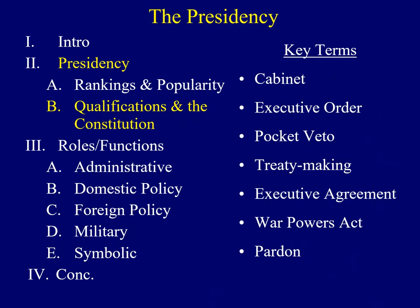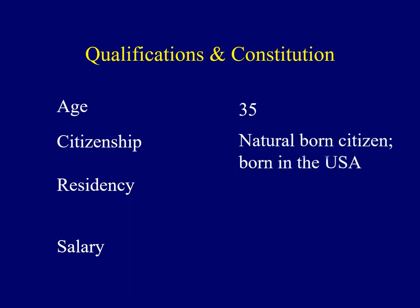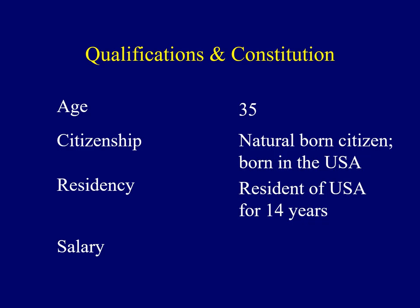Next we'll explore some of the qualifications in order to serve as President of the United States, as outlined in the Constitution. The Constitution outlines a few qualifications. The first deals with age — one must be at least 35 years old. Also, you have to be a natural born citizen, meaning a citizen from birth. The easiest way to achieve this is to be born in the United States. There's also a residency requirement: one has to be a resident of the United States for 14 consecutive years prior to running for president.